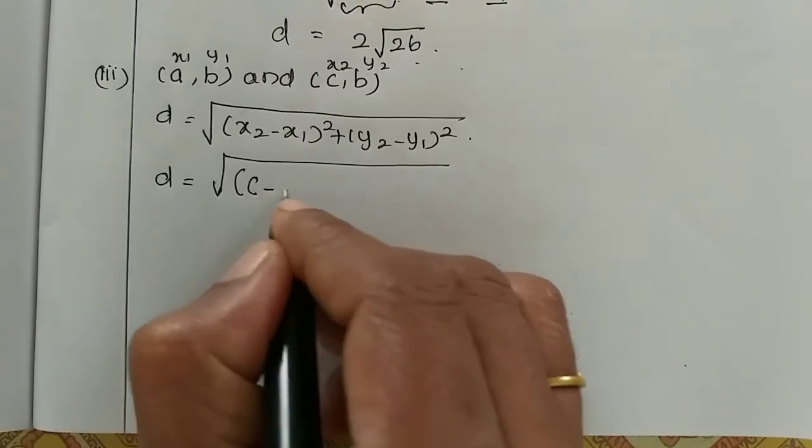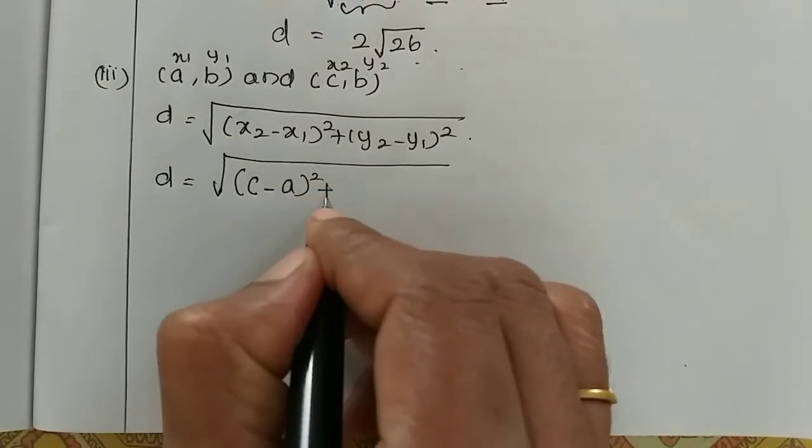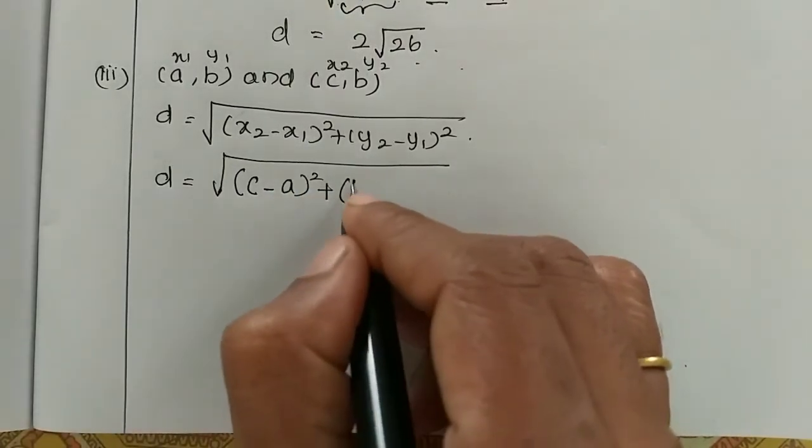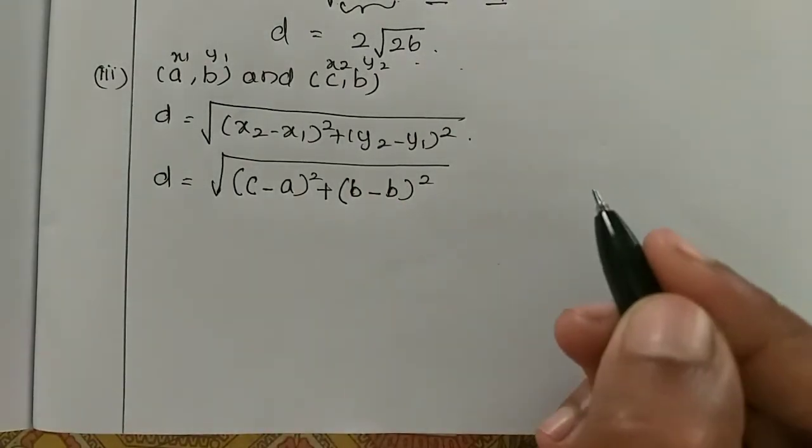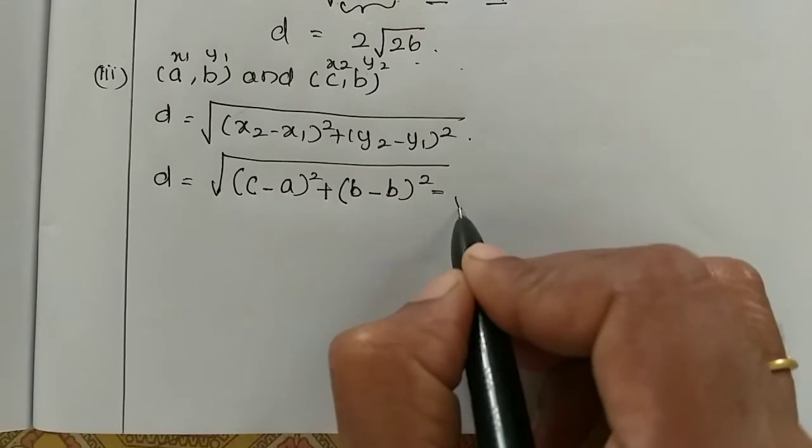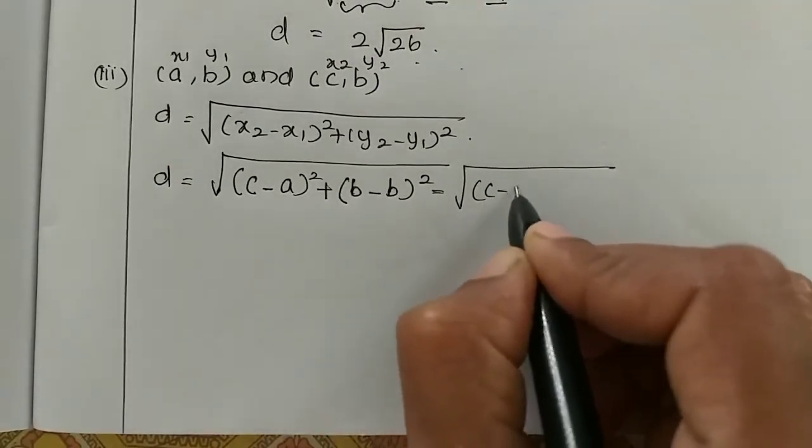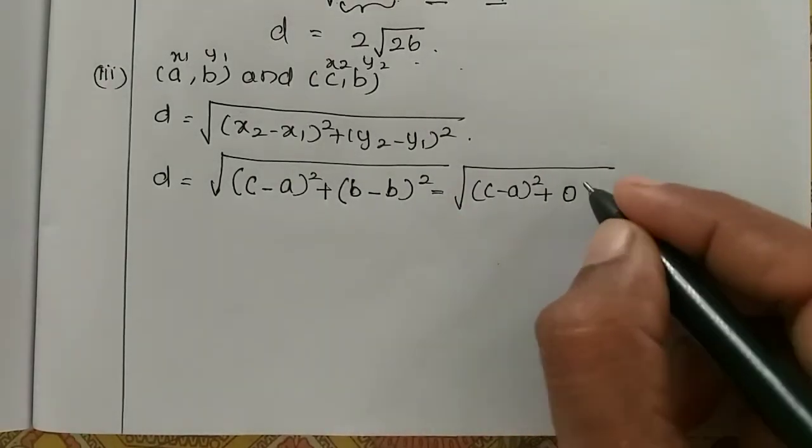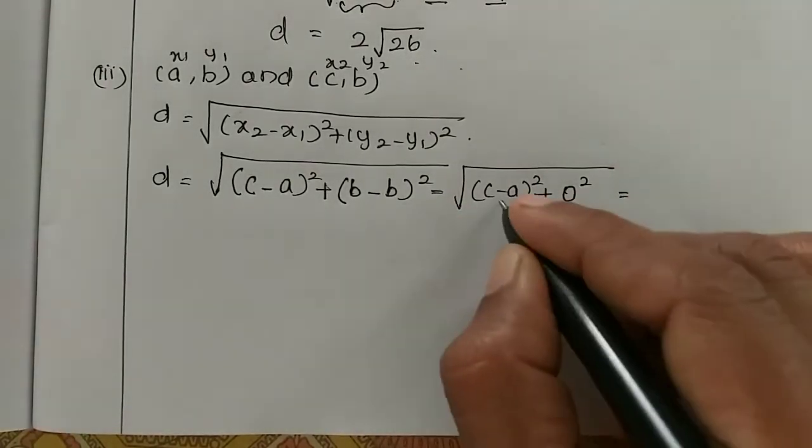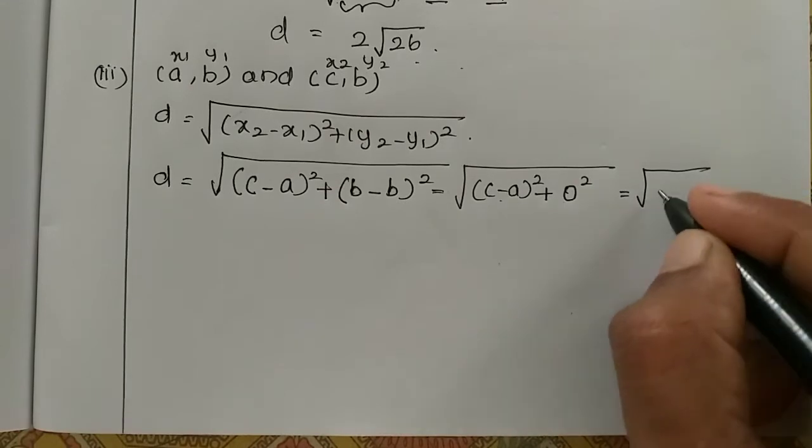So x2 is c minus x1 is a the whole square plus y2 is b minus y1 is b the whole square. So which is equal to root of (c minus a) the whole square plus (b minus b) zero. So 0 square is again 0 that, 0 add means the same number comes.